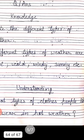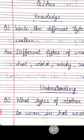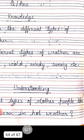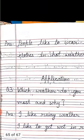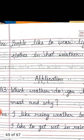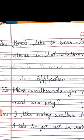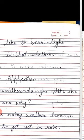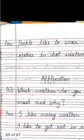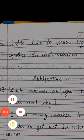Now come to Section B: Understanding. Question 2: What types of clothes do people like to wear in hot weather? Answer: People like to wear light clothes in hot weather. Now Section C: Application. Question 3: Which weather do you like the most and why? Answer: I like rainy weather because I like to get wet in rain.